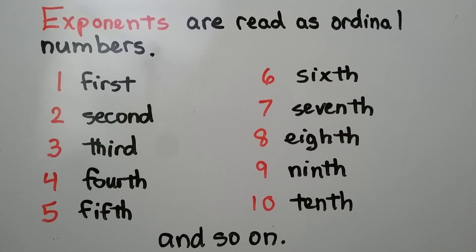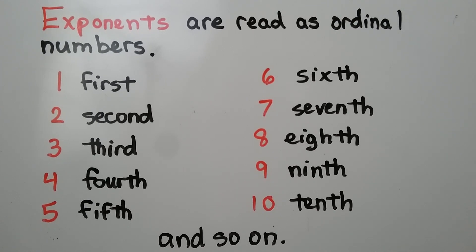Exponents are read as ordinal numbers — that would be like 1st, 2nd, 3rd, 4th, 5th, 6th, 7th, 8th, 9th, 10th, and so on. It's like the names of a grade: 1st grade, 2nd grade, 3rd grade. Those are ordinal numbers.